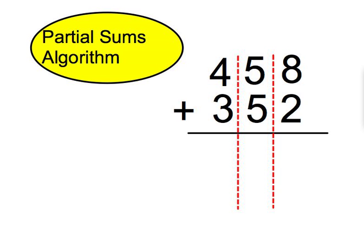So when looking at the number 458, the students need to be aware that that number is made up of 400. It has five tens or 50 and then it has eight ones or 8. They would need to know the same thing for 352.